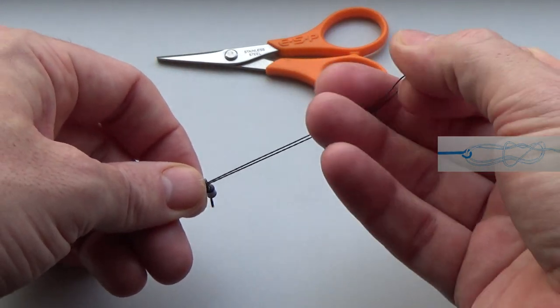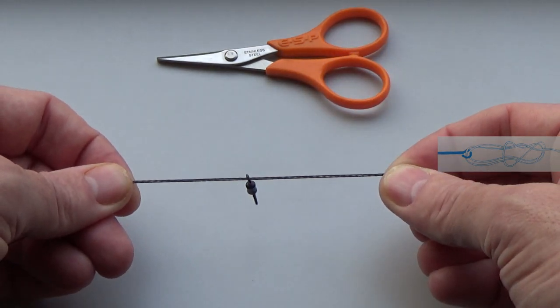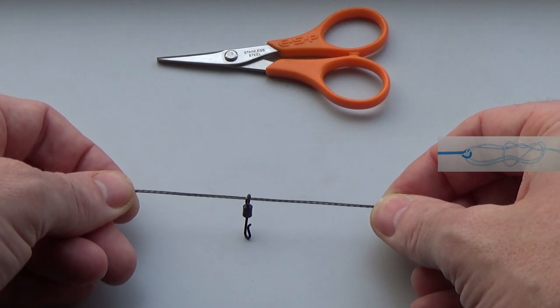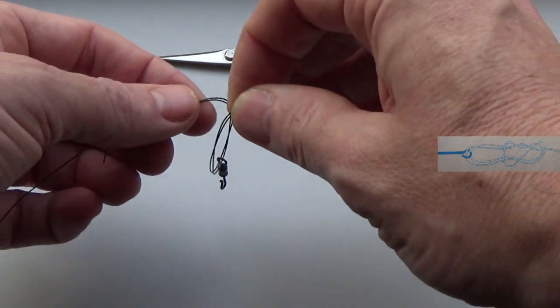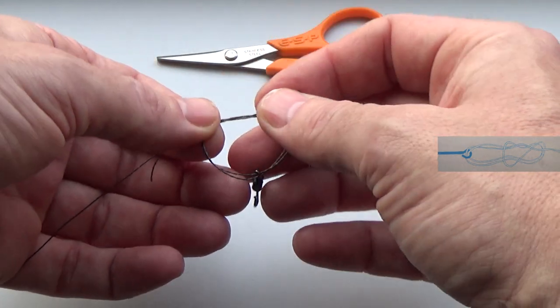You can just fold the braid over and thread it through the eye of the swivel, but I prefer to do it this way, especially when it comes to hooks which have a much smaller eye. All we're going to do is tie an overhand knot in that.